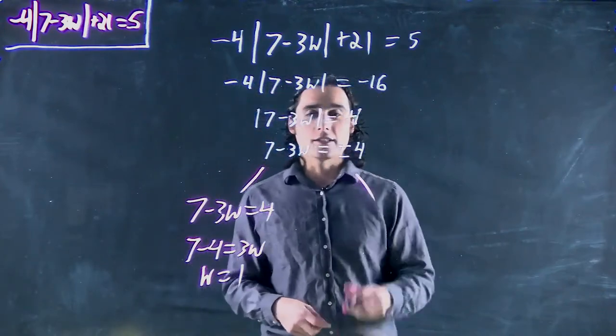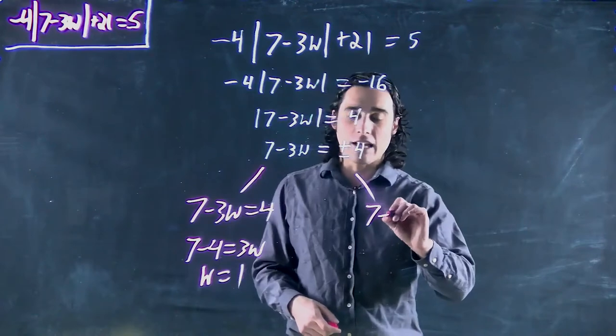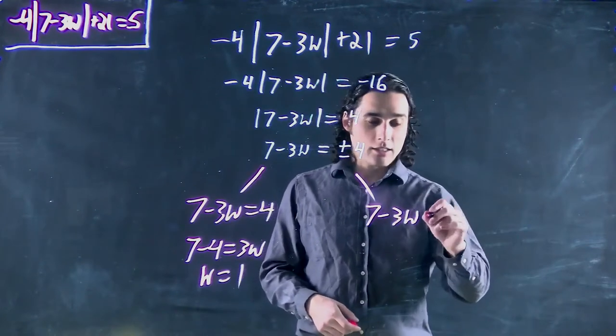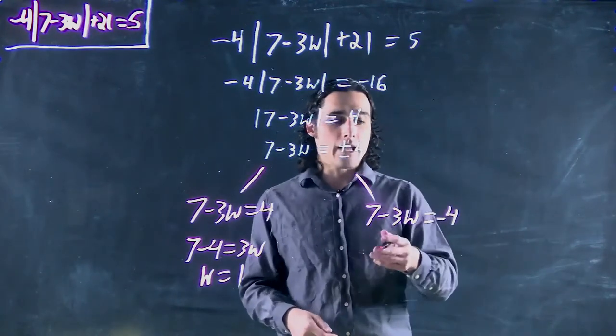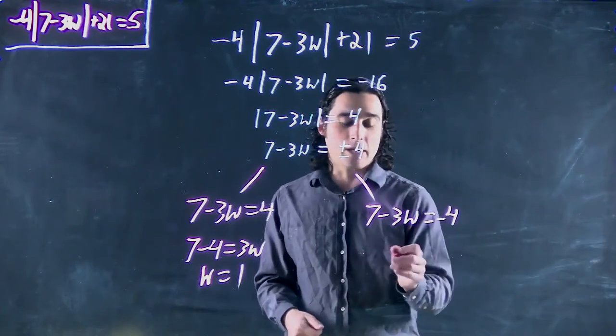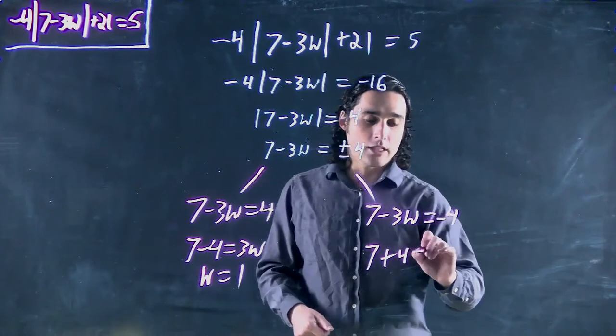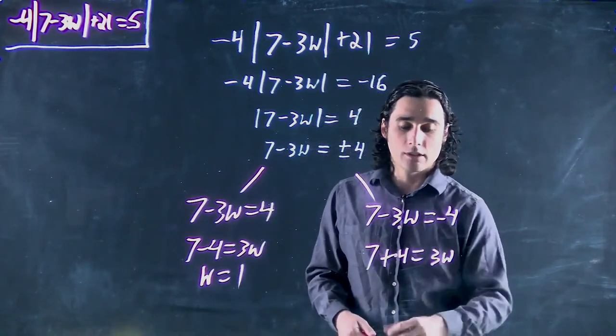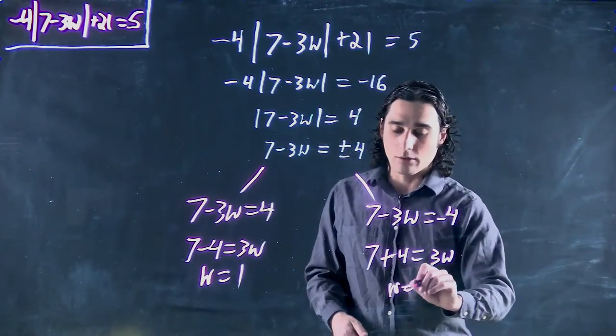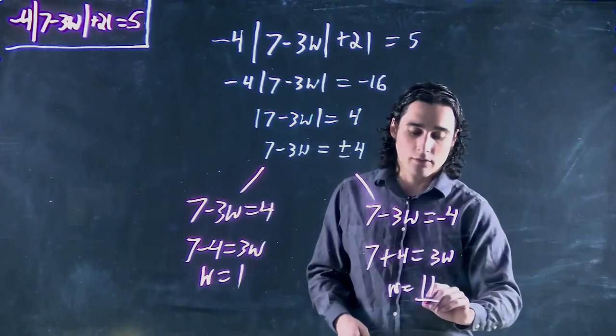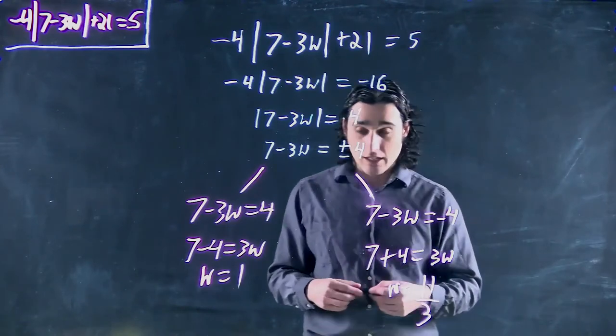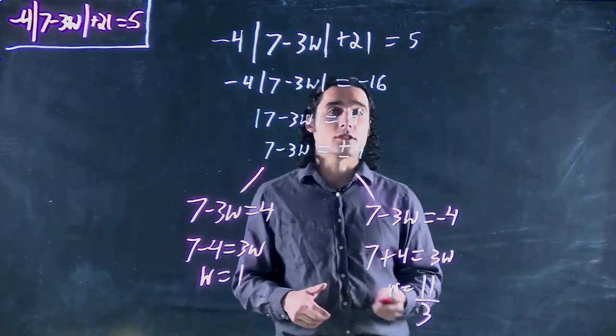Now we can also look at this solution over here. We have 7 - 3w equals -4. Same thing, I can bring the 3w over there to make it positive. So I get 7 + 4 equals 3w. Or in other words, w equals 11 over 3. And again, both of these are viable solutions to our problem.